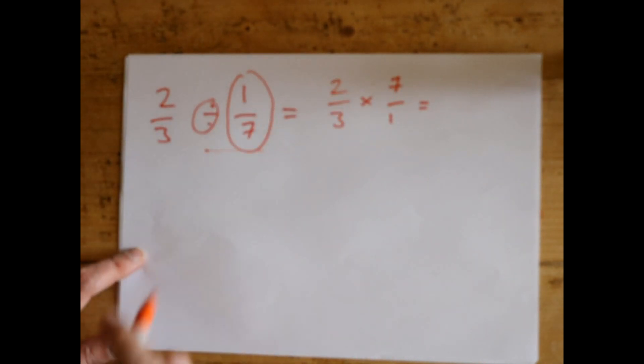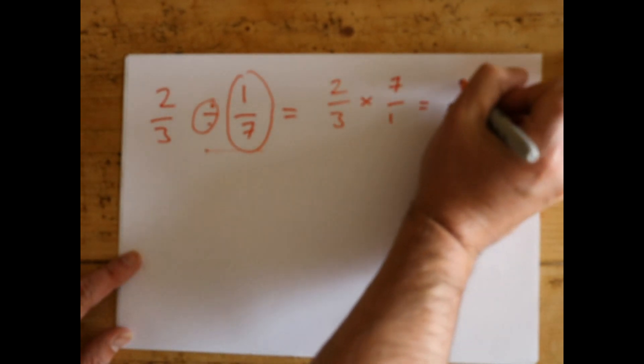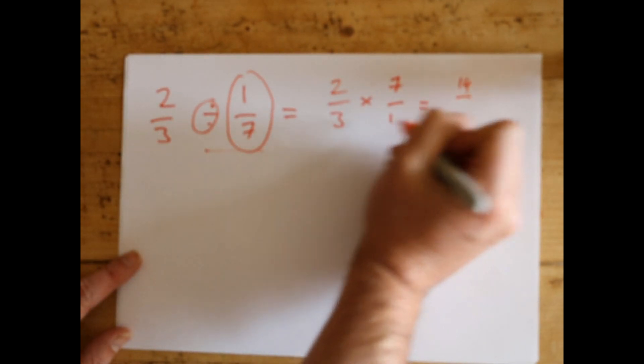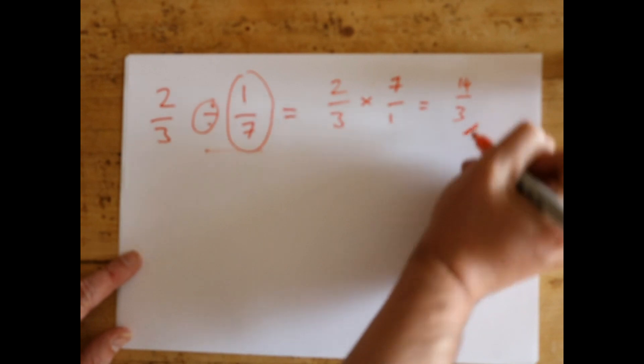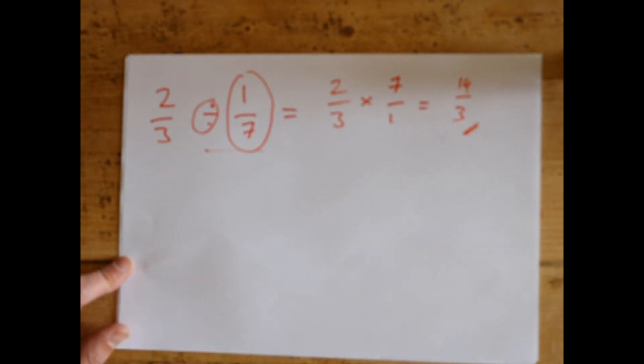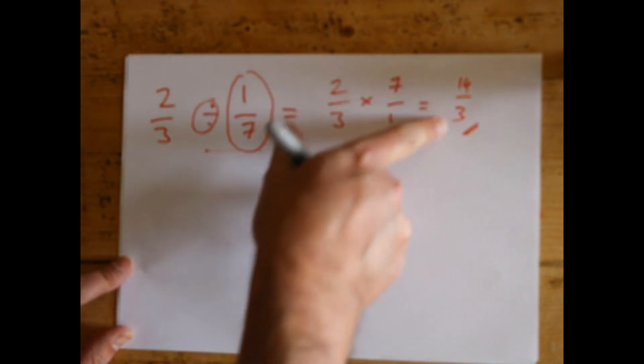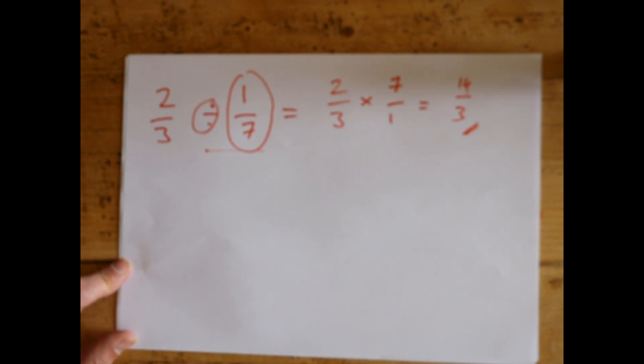Now that's it - now we're just back to multiply. So two times seven is fourteen, and three times one is three. The answer is 14/3. Now that's a top-heavy or fat fraction, and I'll show you in a different video how to get from 14/3 to a nice answer.